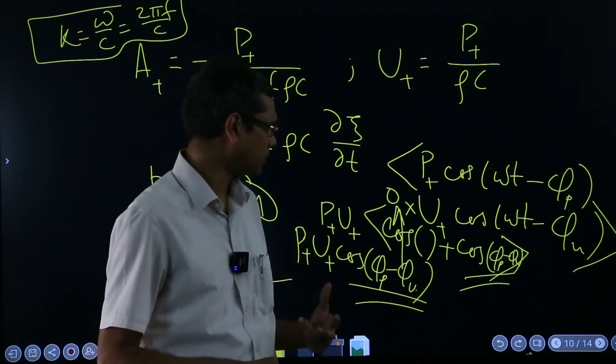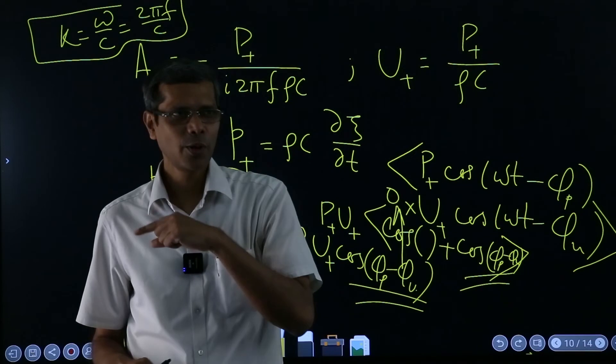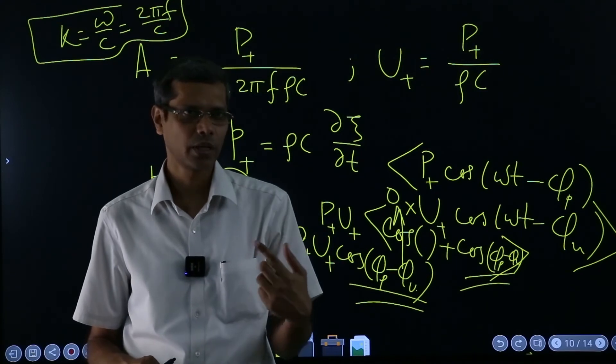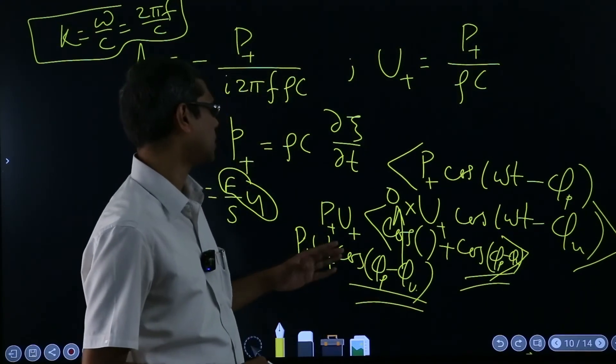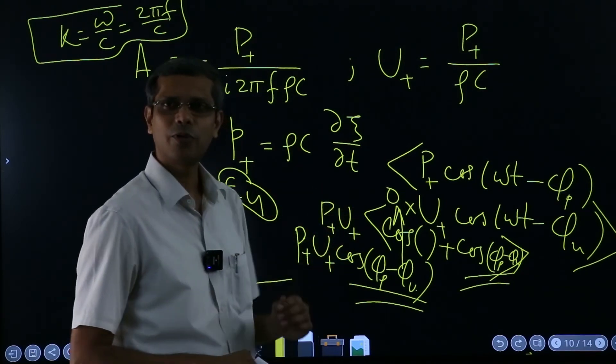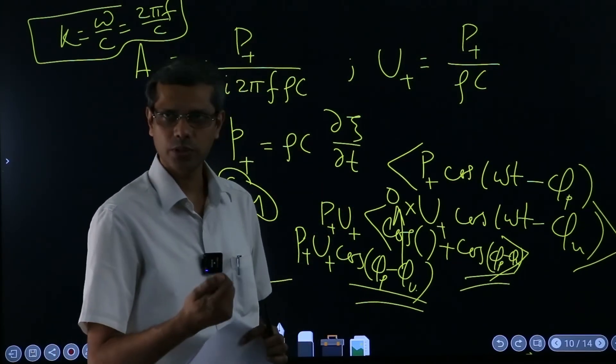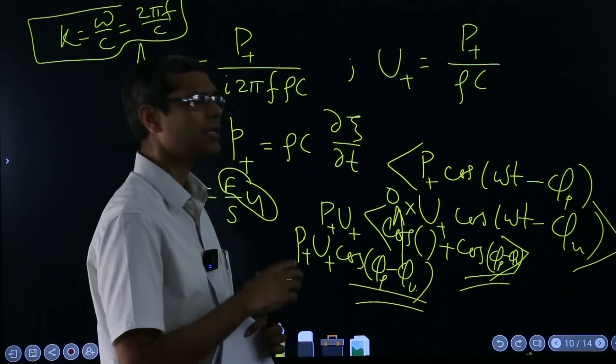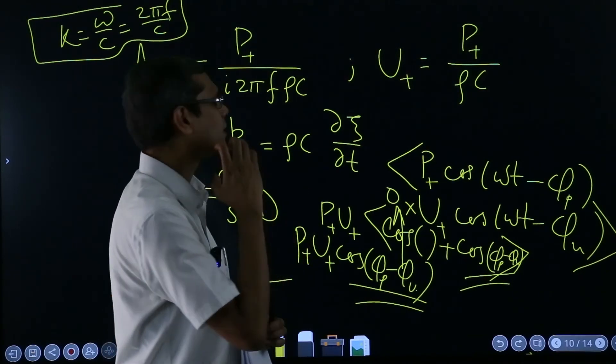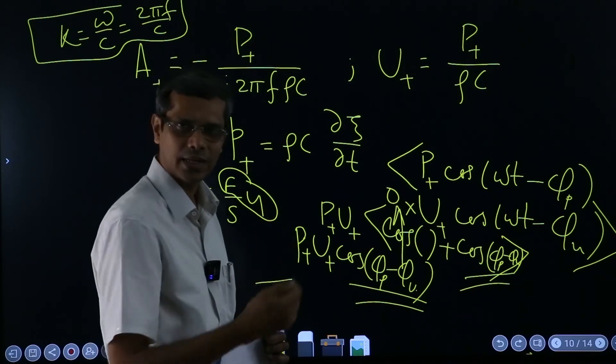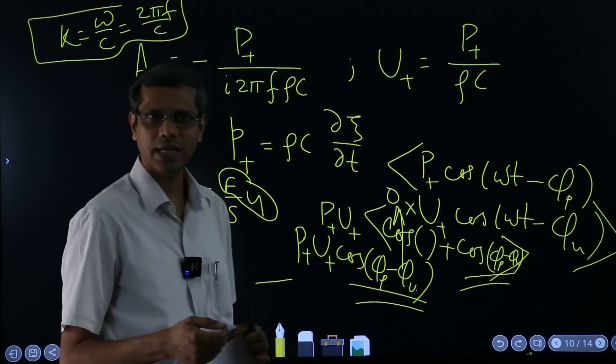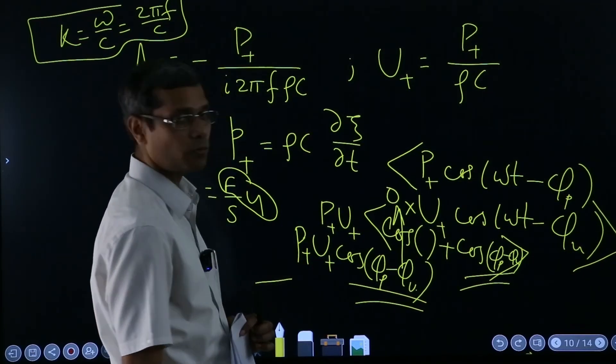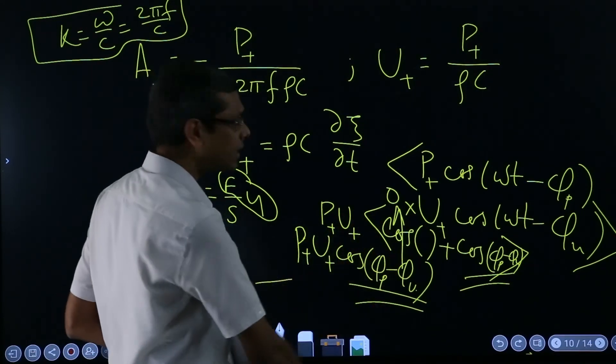So that was about intensity and then why I am talking about intensity so much is in acoustic these are very important terms, intensity, because in string I intentionally skipped the discussion about intensity of power transfer, the energy transfer. But in acoustic we measure them. There are intensity probes through which you can actually measure how much power is getting transferred at a particular location. So that is why it is very important that we understand the acoustic intensity, that is how much energy per unit time per unit area is passing at a particular point.